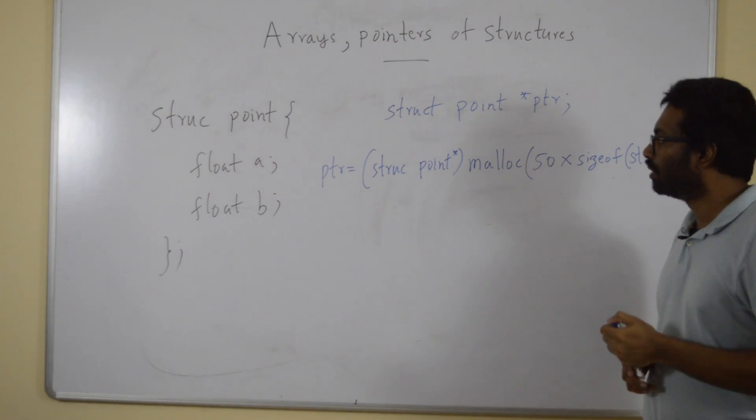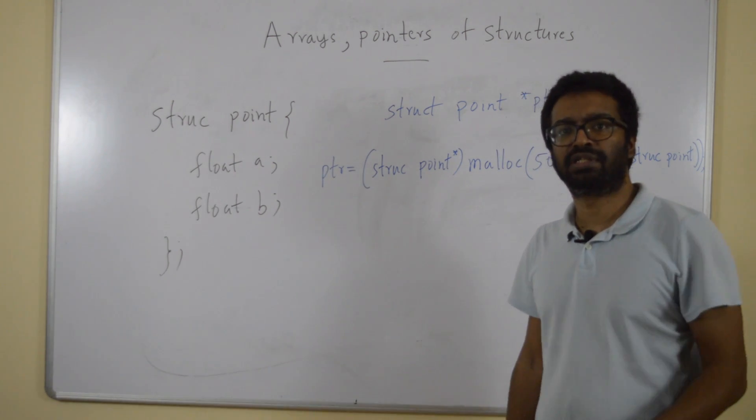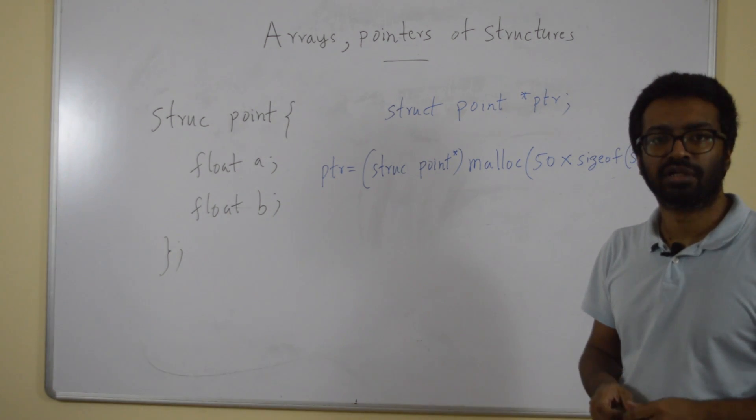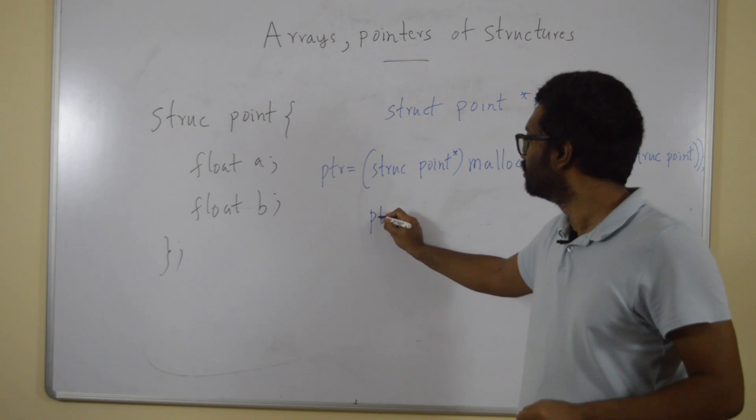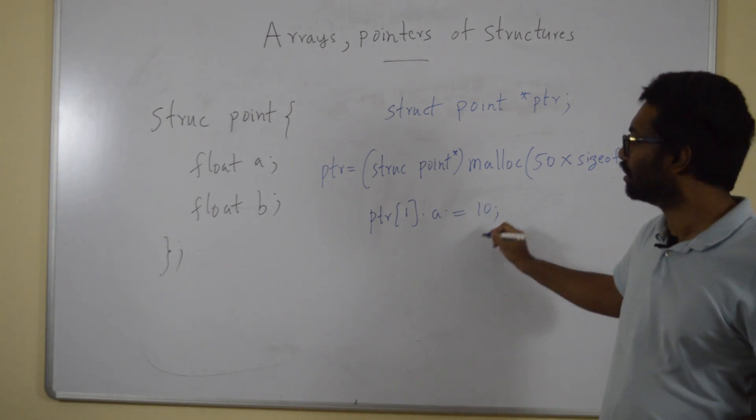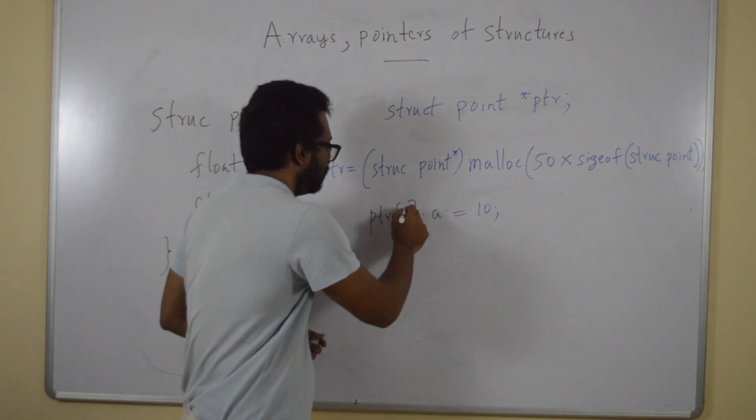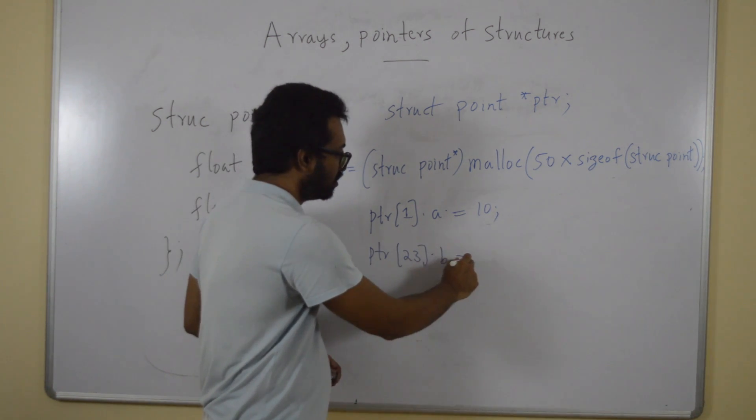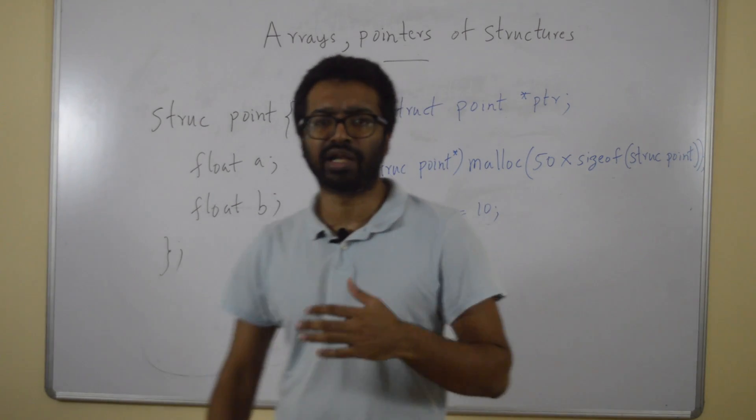It's clear. Now, how do I access the value of the first array which is dynamically allocated? Exactly like we did for static allocation. Let's say I am assigning the value 10 to this. Now, if I wanted something else, I could have done ptr.